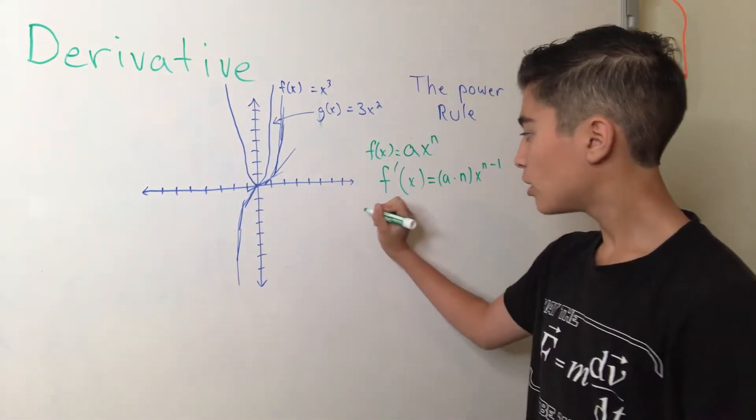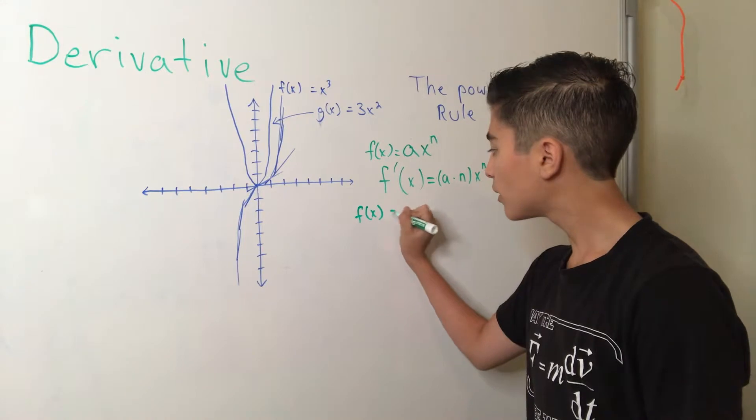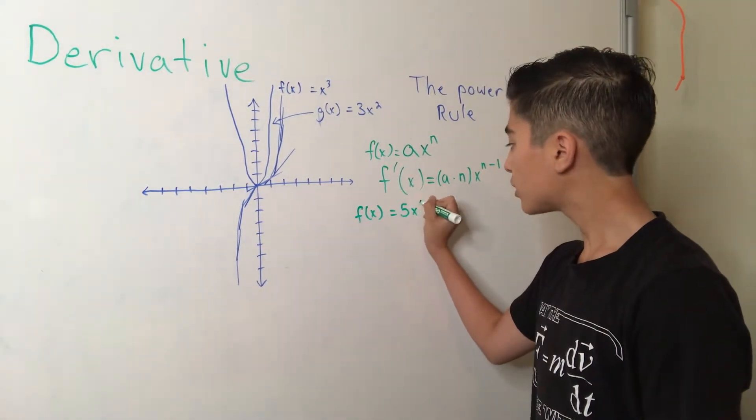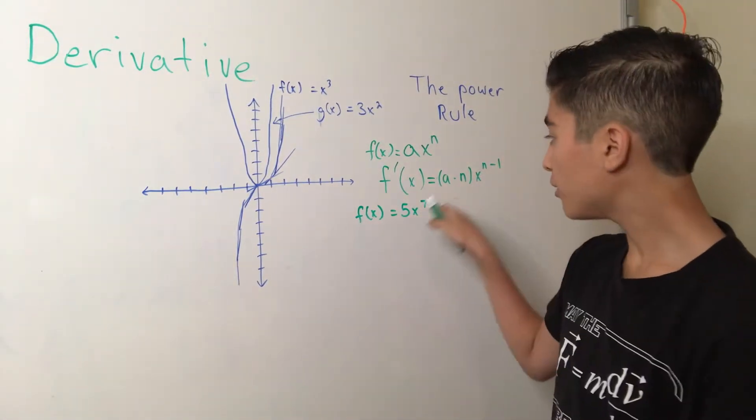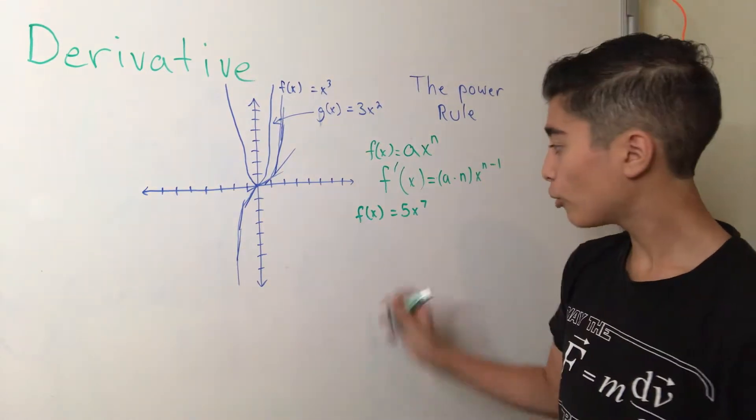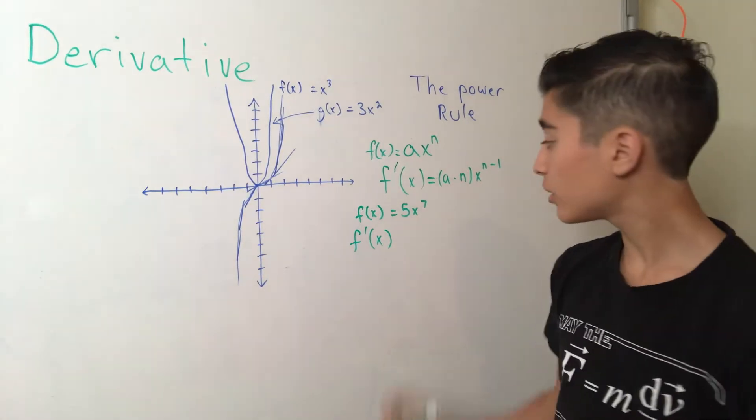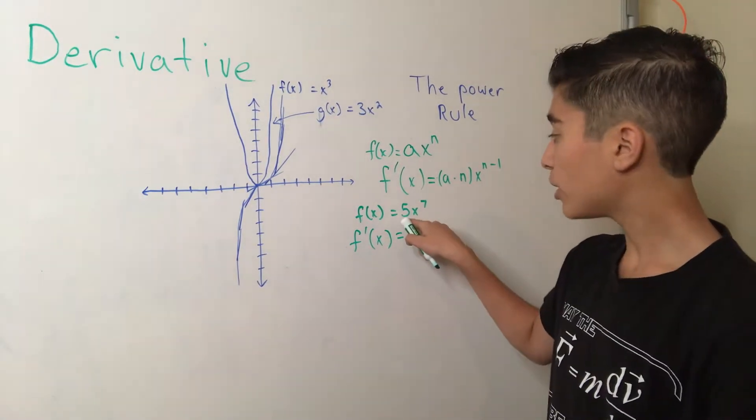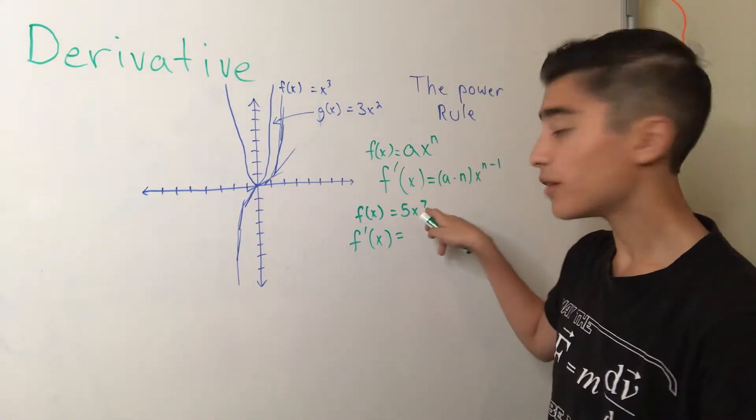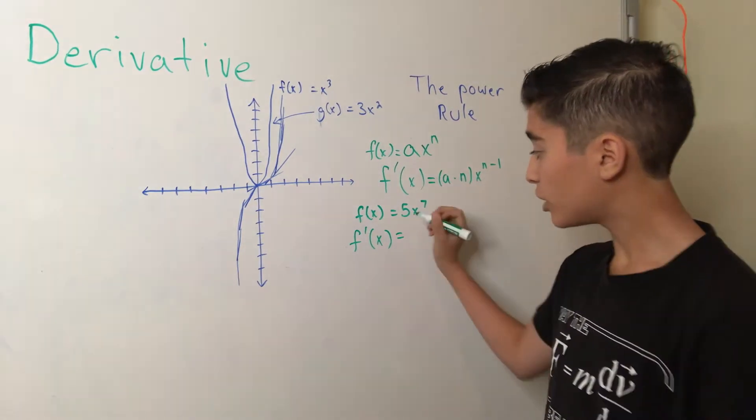So, what does this mean? Well, let's say we have the function 5 times x to the 7th. 5 is our a and 7 is our n. So, what do we do with this? The derivative of 5x to the 7th should look something like this. We know that our a is 5 and our n is 7. So, a times n should equal 35.